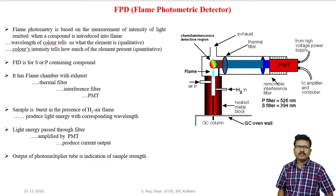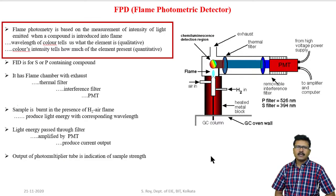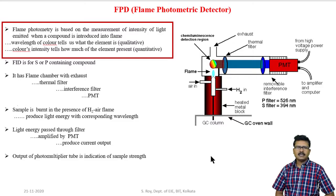Now explaining flame photometric detector. Flame photometry is based on the measurement of intensity of light emitted when a compound is introduced into the flame. This gives qualitative as well as quantitative measures. The wavelength of the color tells us what the element is — this is qualitative. The color intensity tells us how much of the element is present — this is quantitative.